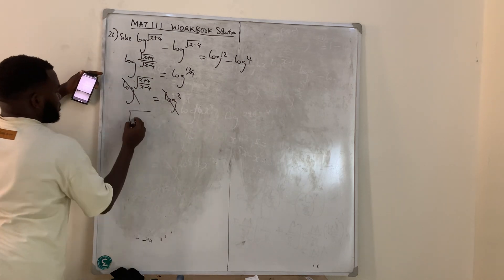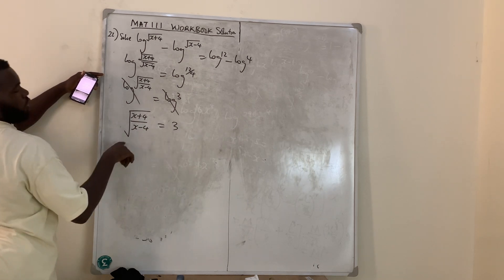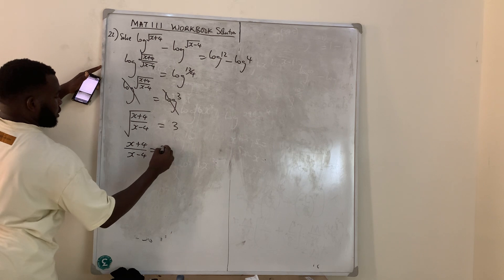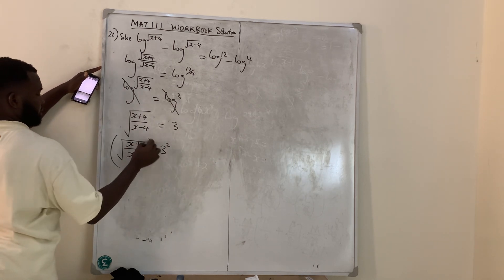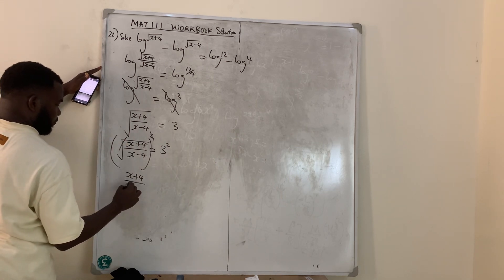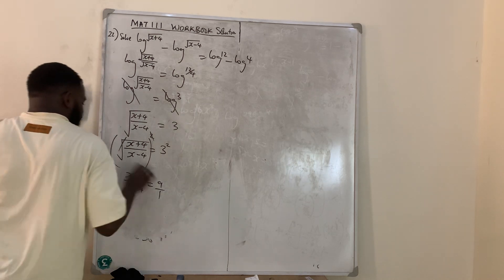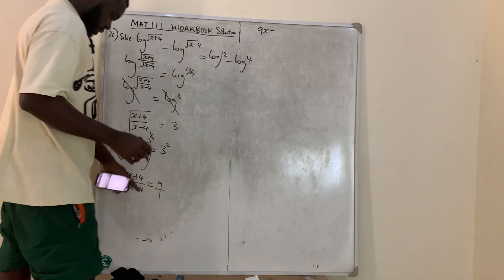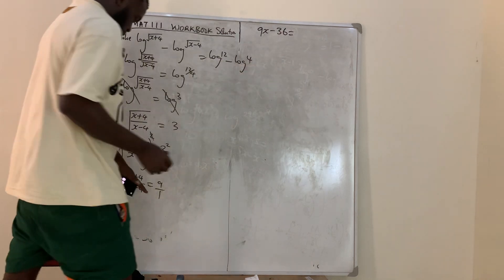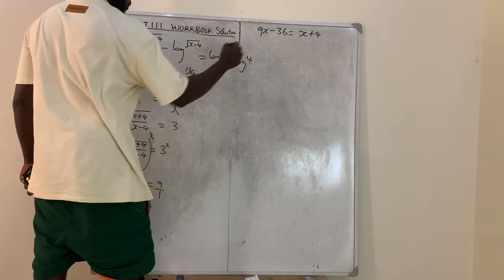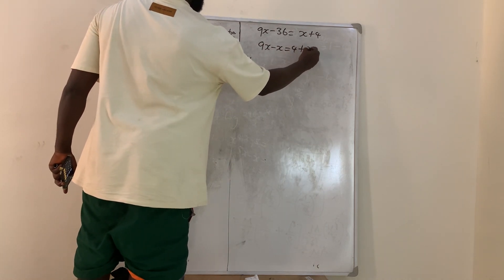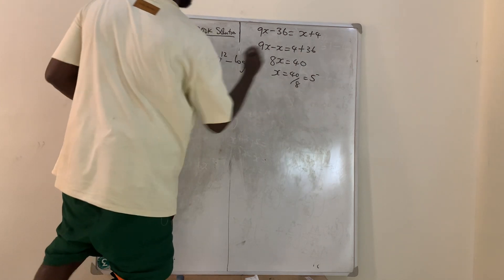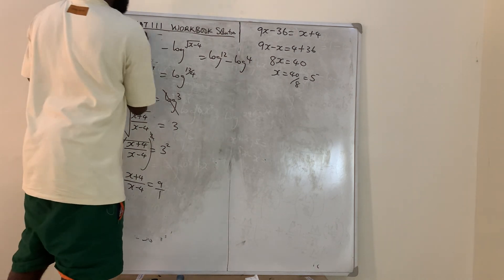Removing the logs, we get √[(x+4)/(x−4)] = 3. Squaring both sides removes the square root: (x+4)/(x−4) = 9. Cross-multiplying gives 9x − 36 = x + 4. Collecting like terms: 9x − x = 4 + 36, so 8x = 40, therefore x = 40 ÷ 8 = 5. That is the answer for question number 22.